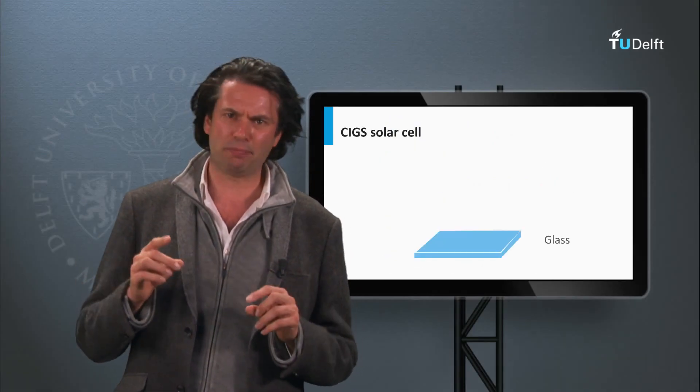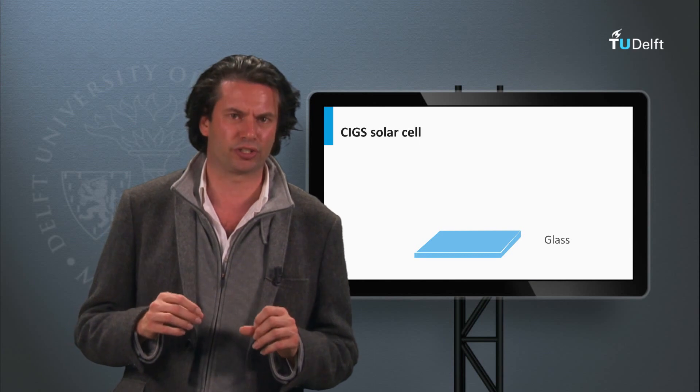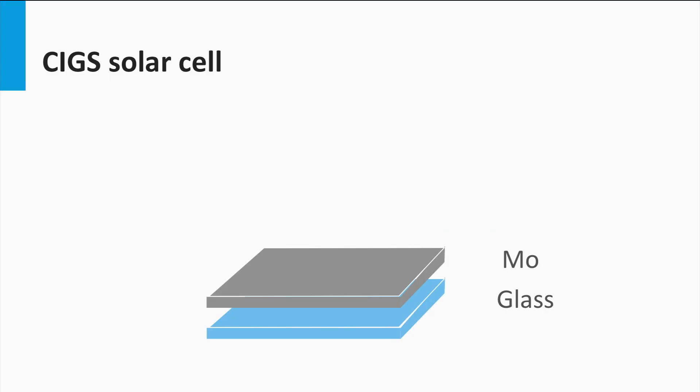Let's look at a typical CIGS solar cell structure. The substrate is glass. On top of the glass, a molybdenum layer with typical thickness of 1 micron is deposited, which acts as the back contact.